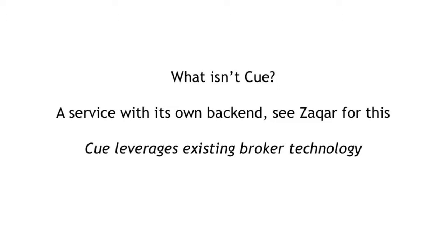One of the questions we get asked a lot on the Q team is how does this relate to another OpenStack project called Zakhar. Zakhar is very good at implementing the full stack of a messaging solution — they're writing a backend with Mongo, all the way up to the API layer. We're not trying to solve messaging in the same way that Zakhar is trying to solve the messaging problem.